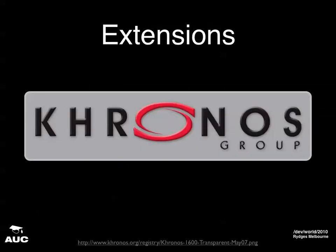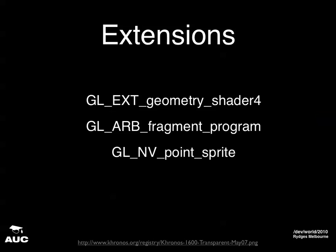OpenGL is a relatively simple API — Application Programming Interface — and it has various extensions. For example, NVIDIA can make up their own extensions, get them addressed by the Khronos group, and once adopted, anyone can use them. This allows people to use things before they become part of the OpenGL standard. Things like the geometry shader, fragment programs, and NVPointSprite are examples of extensions. NVPointSprite is an NVIDIA-specific extension. Geometry shaders and fragment programs have actually been wound into the general standard of OpenGL, but previously they were extensions.